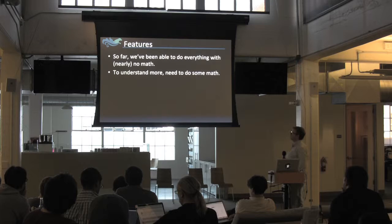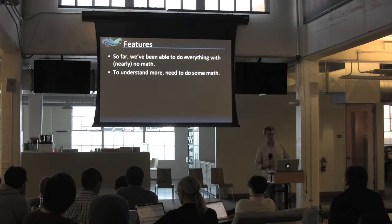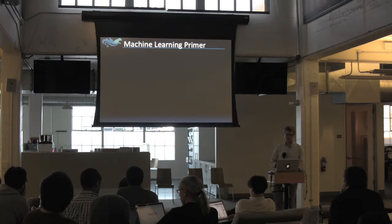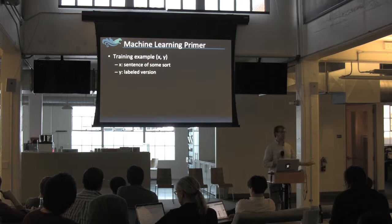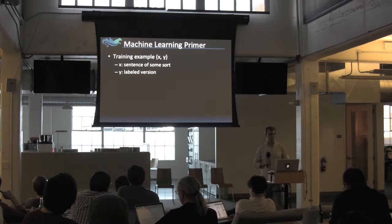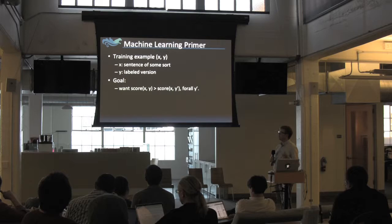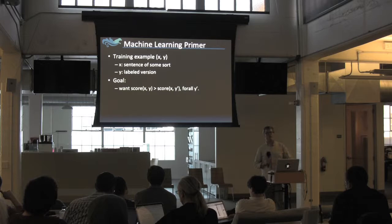I want to talk a little about how features are used in machine learning. We're going to talk about a very basic machine learning algorithm called the perceptron — internally in Epic we use a different algorithm but it works fairly similarly. In supervised machine learning, we're typically given a training example X and a label Y. X is a sentence and Y is some labeled version of that sentence broken into named entities. We'd like the score for the training example with the right answer to be bigger than the score for any other answer.